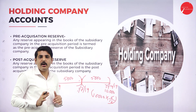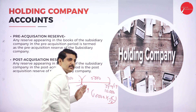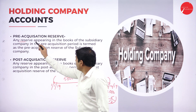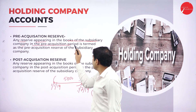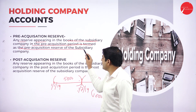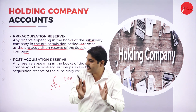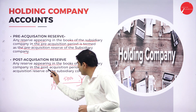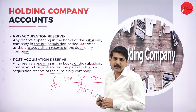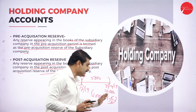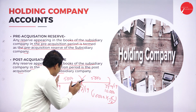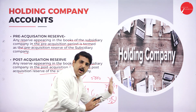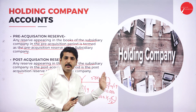Pre-acquisition reserve is also called capital reserve, and post-acquisition reserve is also called revenue reserve. Any reserve appearing in the books of the subsidiary company in the pre-acquisition period is termed the pre-acquisition reserve. Any reserve in the post-acquisition period is called the post-acquisition reserve. So before acquisition, the amount is capital reserve; after acquisition, it is revenue reserve.